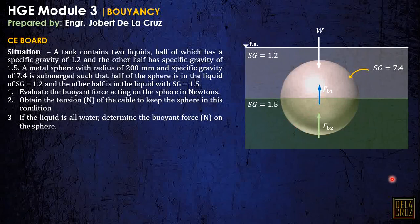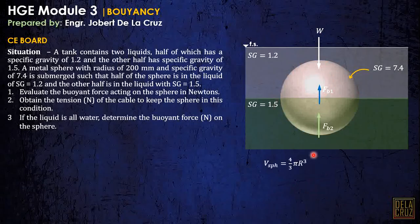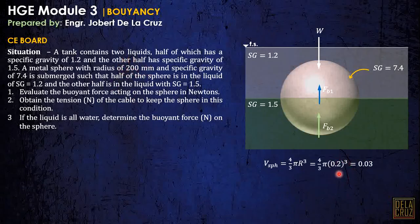First, compute the volume of the sphere. Recall the formula: V = (4/3)πr³. The radius is 200 millimeters, converted to 0.2 meters. This gives us the volume of the sphere in cubic meters.